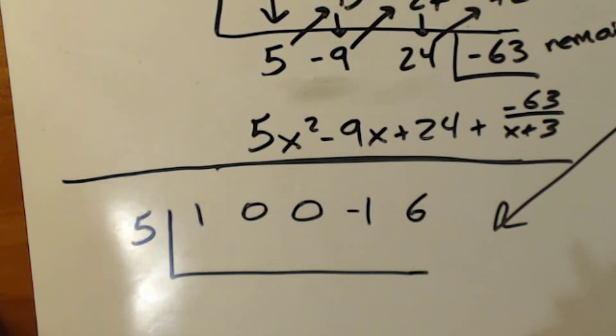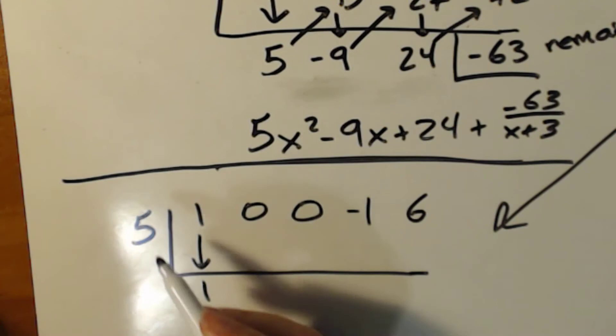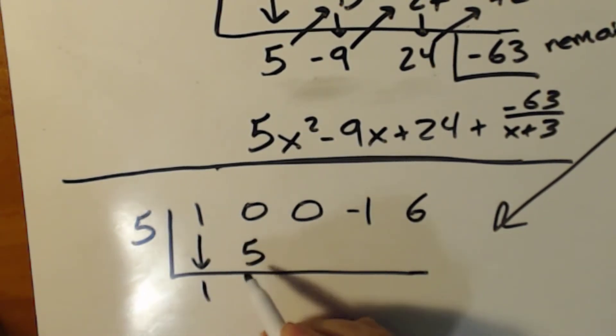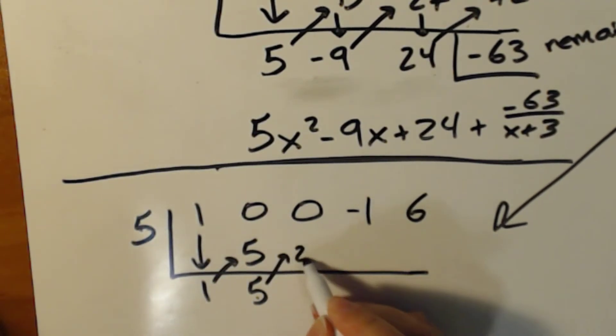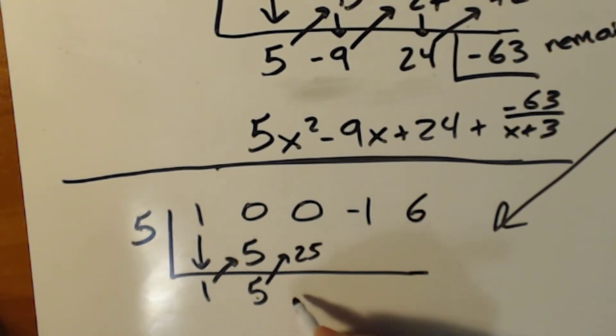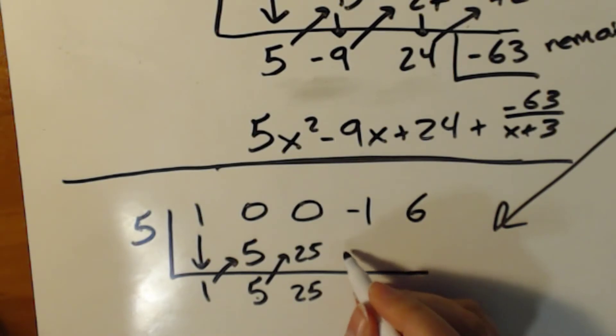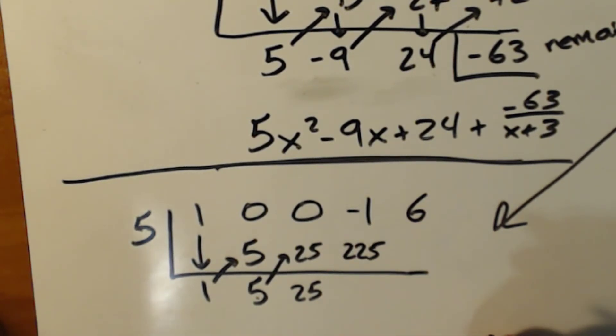So then I'm going to do the exact same thing as I did before. Now that I've set it up, I'm going to take my 1. I'm going to bring it straight down. I'm going to take 5 times 1 is 5. And then 0 plus 5 is 5. 5 times 5 is 25. 0 plus 25 is 25. Sometimes they do this. They get out of hand very quickly when you just make up numbers.